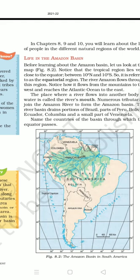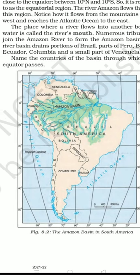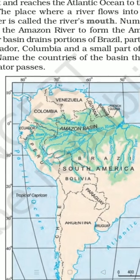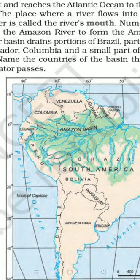Now we talk about tropical areas. For example, the Amazon Basin — where is it situated? Looking at the map, you can see the zero-degree line, which means the equator. The Amazon Basin is situated exactly on the equator, so the first thing you can make out is that direct sun rays fall over there.